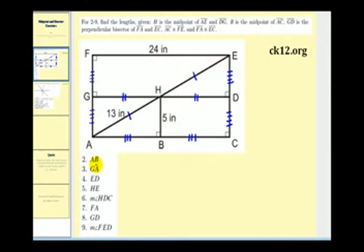The first question is determine the length of AB. Well here's AB and notice it's one of the legs of this right triangle right here. So we could determine the length of AB by using the Pythagorean theorem. However, since we know that AC is congruent to FE and FE is 24 inches, this would also be 24 inches. But since AB is the same length as BC, they'd both have to be 12 inches long. So AB must be 12 inches.